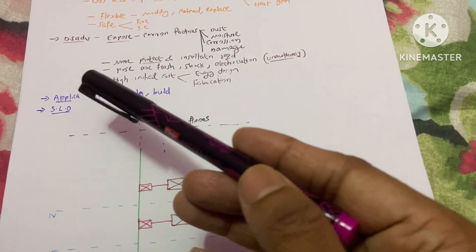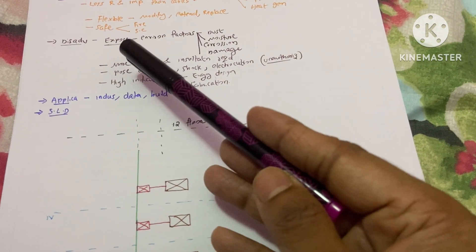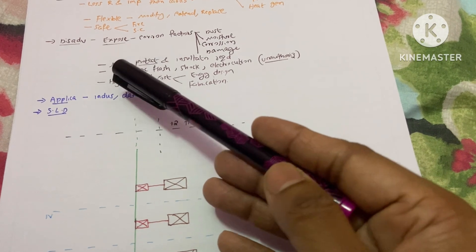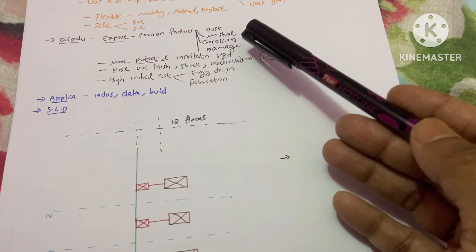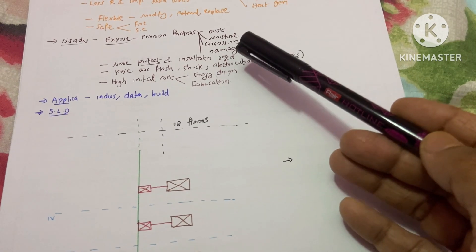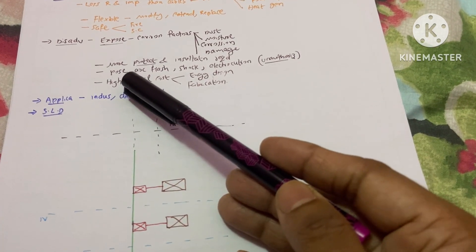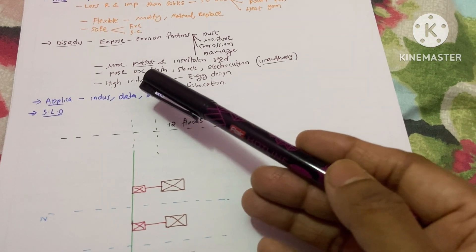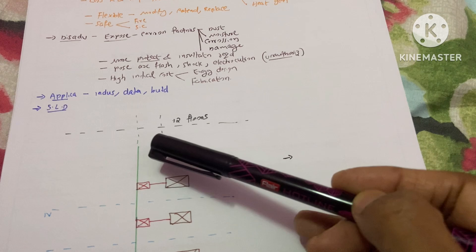Now about the disadvantages. One disadvantage is it is exposed to environmental factors like dust, moisture, corrosion, and also damage. The next disadvantage is it requires more protection and insulation.